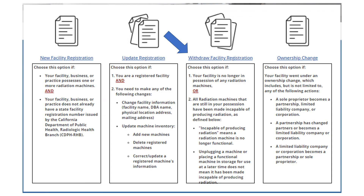Once you reach the Radiation Machine Registration page, you will see that there are four options available to choose from. We are going over the Withdraw Facility Registration option in this tutorial. Select the link that the arrow is pointed toward.